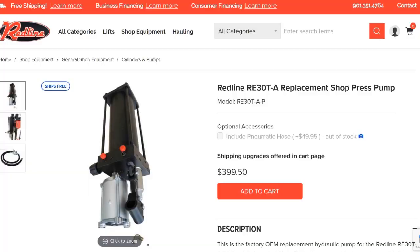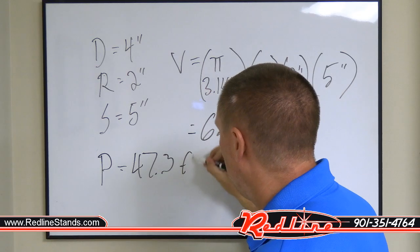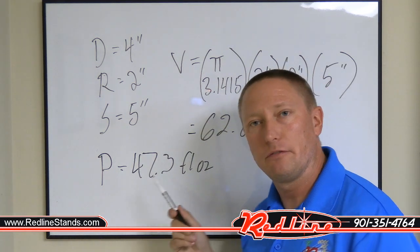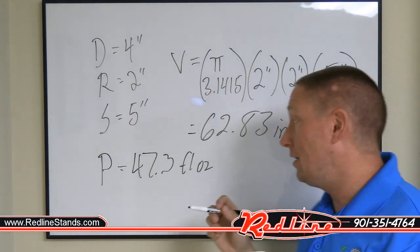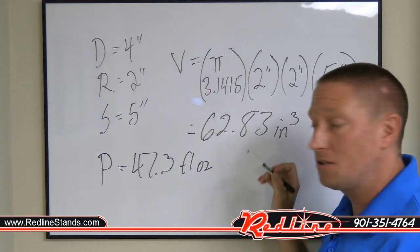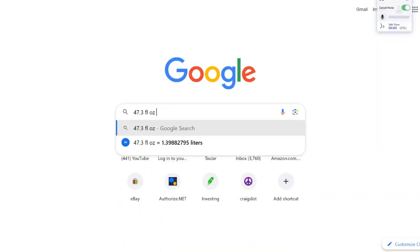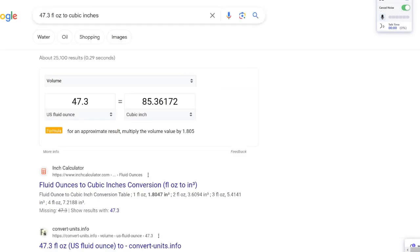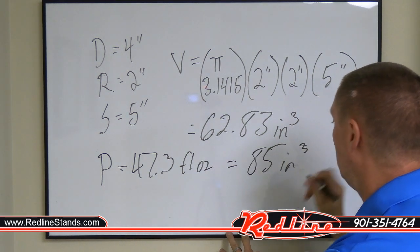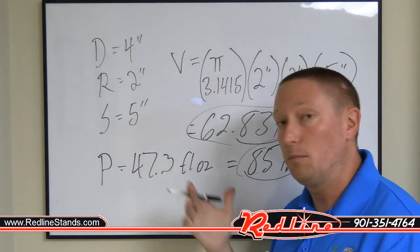If you plug into a calculator 3.1415 × 2 × 2 × 5, you get 62.83 cubic inches. Now, on our website in the specs tab, our 30-ton pump holds 47.3 fluid ounces of hydraulic fluid. So the question becomes: is 47.3 fluid ounces enough to fill our 62.83 cubic inch cylinder? This is easy — just go to Google and type '47.3 ounces to cubic inches.' Google will quickly tell you that 47.3 fluid ounces is about 85 cubic inches. That's greater than 62.83, so that pump possesses enough fluid to operate that cylinder.